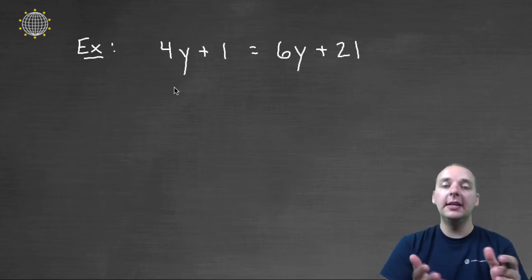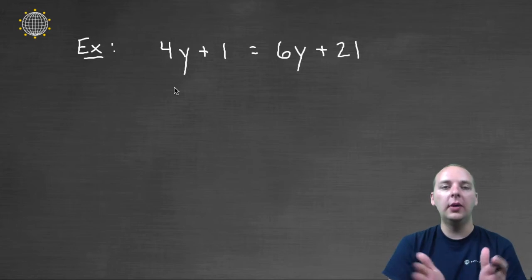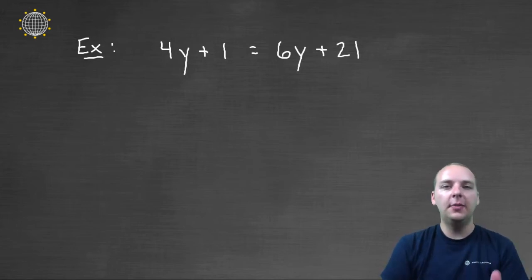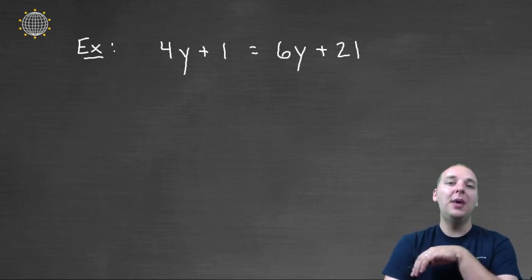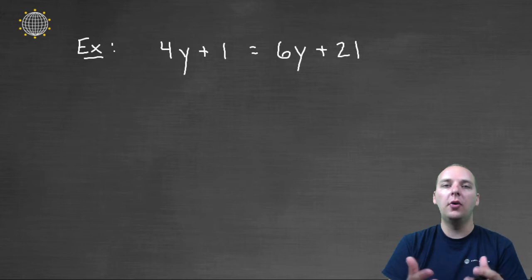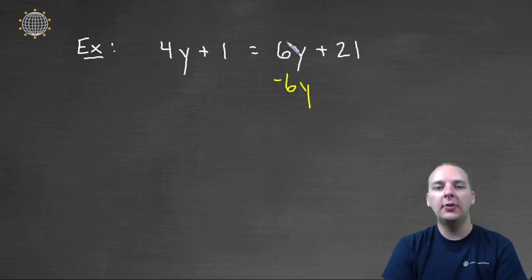Now I need to move the y's either to the left side, or the right side. Now technically, either one is okay, there is no right or wrong way of doing that. But informally, let me tell you this though. If you can help it, it's best to try to leave your variable coefficient positive. It just makes the algebra just slightly easier. So notice, if we subtracted 6y to move the 6y to the left, and subtracted 6y from the left also, do you see how we would get a -2y? That's okay, there's nothing wrong with that, but it's just not preferable. So what I'd rather do, I think, instead of moving the 6y to the left, let's move the 4y to the right, since it's a smaller quantity.